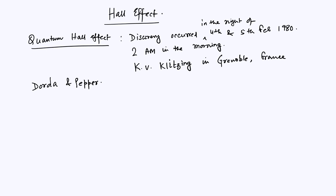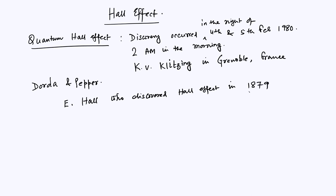Incidentally, this discovery occurred about 100 years after Edwin Hall discovered the classical Hall effect. The classical Hall effect was discovered in 1879 and the quantum Hall effect in 1980 — just about 101 years apart — and that is where the interesting comparison comes in.